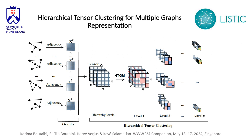Graph clustering is a challenging task, especially when there is a hierarchical structure. The proposed method consists of tensor graph clustering on a hierarchical data structure, where we have multiple graphs represented by adjacency matrices. The availability of multiple graphs in the multi-graph setting provides additional information that can be leveraged to improve clustering results.